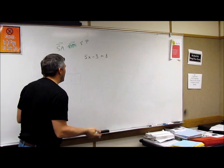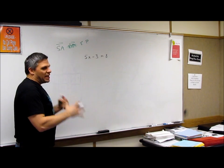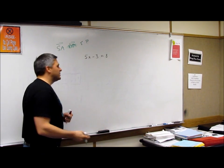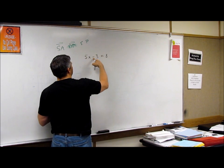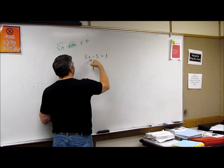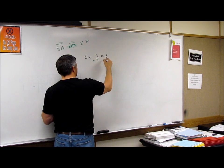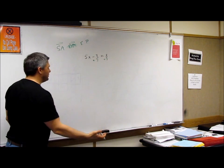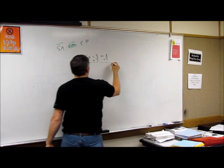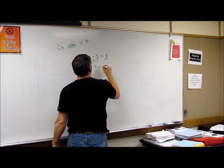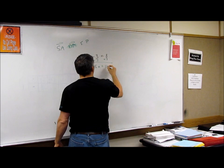Okay, so subtraction and addition, whatever's subtracting or adding to the X. So I'm going to do the opposite. Since we're solving, we're going to do the opposite. So whatever's here, I'm going to do the opposite. But what I do to one side, I have to do to the other. And so I get 5X is equal to 11.